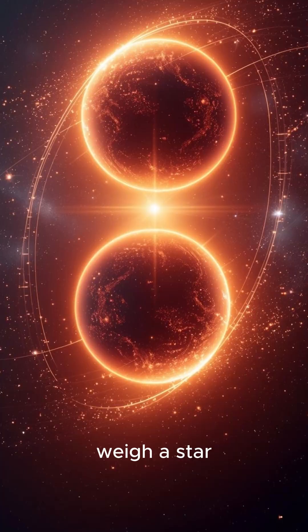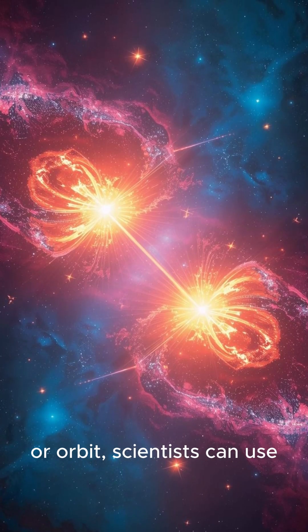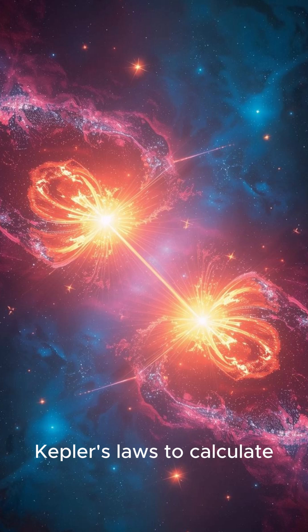way to directly weigh a star. By observing the pair's gravitational dance or orbit, scientists can use Kepler's laws to calculate their exact mass.